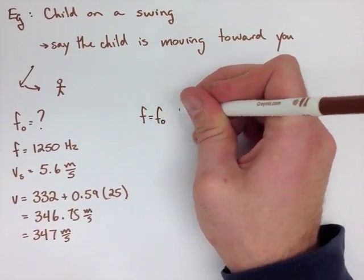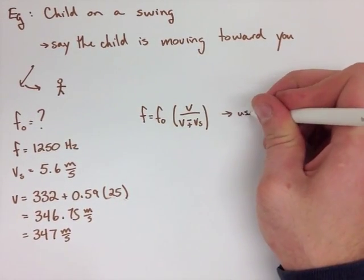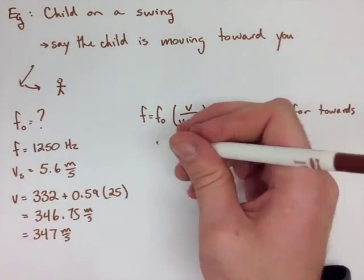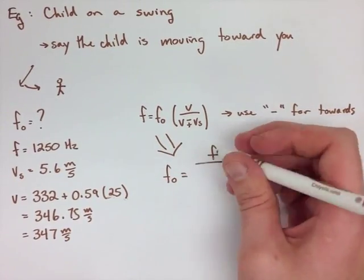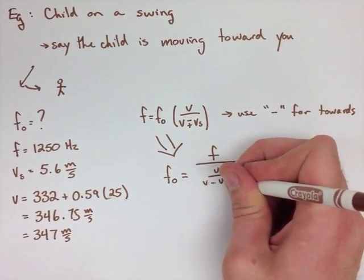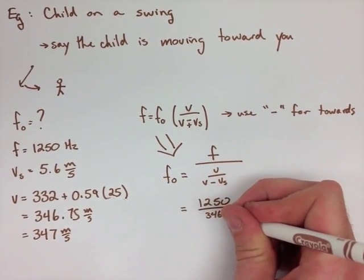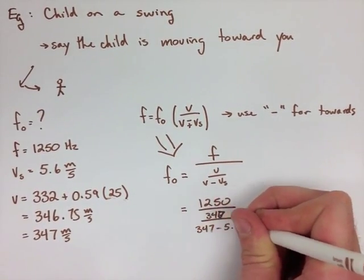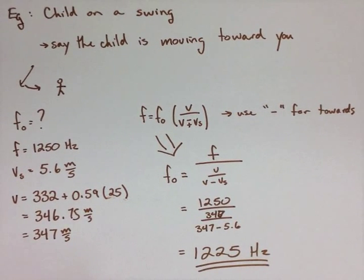When we're using our frequency equation here, we're going to use the minus on the bottom of the equation because the child is swinging towards us, therefore making the frequency higher. When we rearrange this equation for f0, we get f, the normal frequency, over V over V minus velocity of source. We sub in all of our numbers, we end up finding the rest frequency to be 1225 hertz. Try the next example on your own, and we'll take it up in class tomorrow.